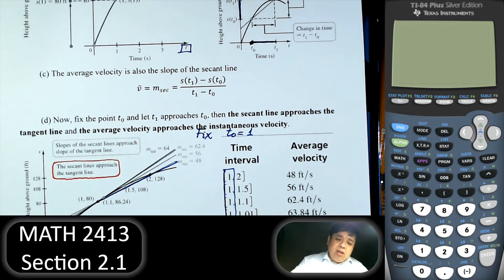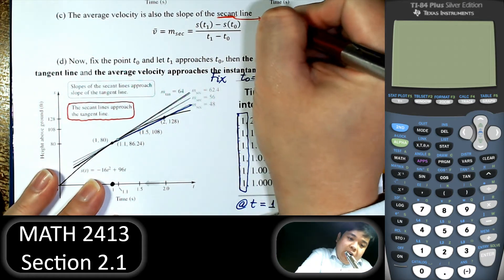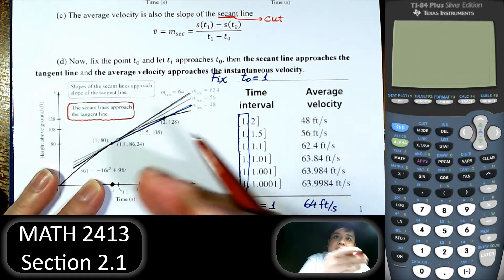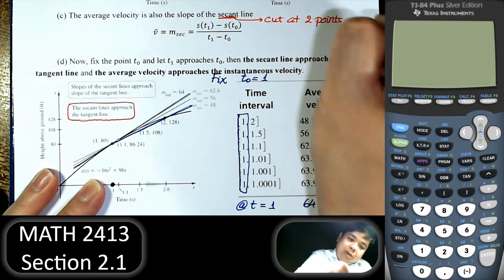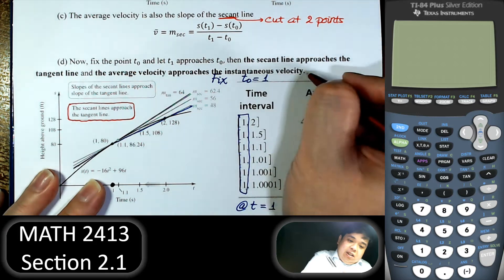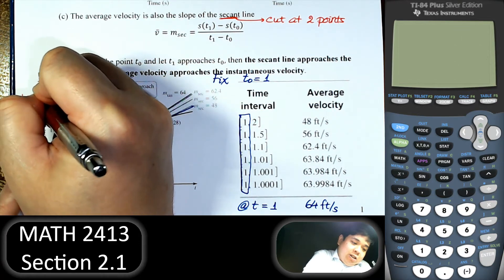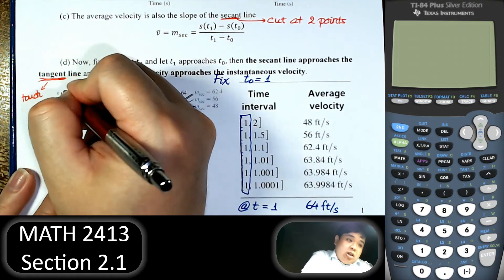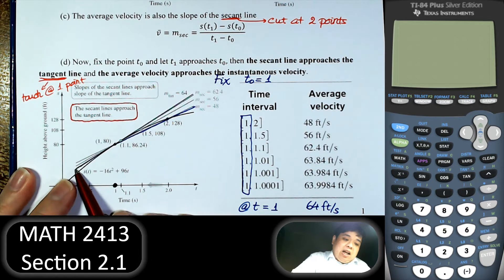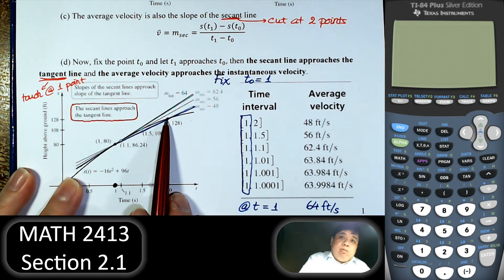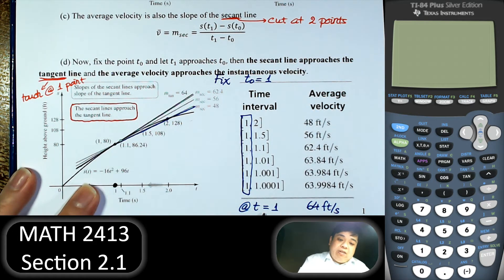The secant is the old Greek word. Secant means cut, cut of course at two points. And the tangent is from a Greek letter, meaning touch. And when it touches at one point. So the secant line cuts the graph at two points. When we move one point closer to the other, essentially it becomes the tangent line. The tangent line touches the graph at one point.